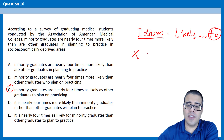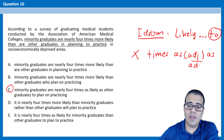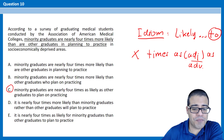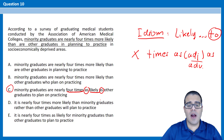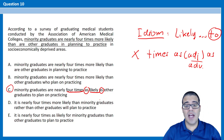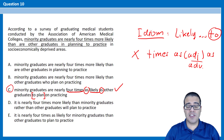In general, the structure is 'X times as' — usually adjective or adverb — 'as.' It could be an adverb as well. So the full structure is 'four times as likely as.' Minority graduates are four times as likely as other graduates, and then you have the infinitive 'to plan.' Very good. See what the answer is. Any questions about this?